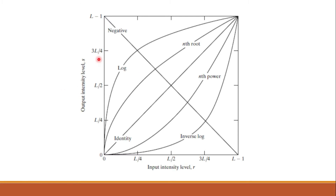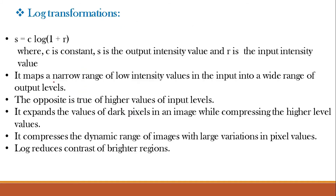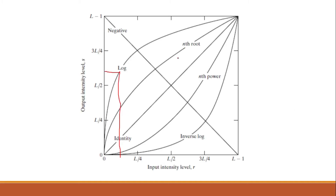Looking at the same figure again: for the log function, when the input value is low (near black), the output value becomes much brighter — whiter. The darker regions become brighter. Therefore, it maps a narrow range of low intensity input values into a wide range of output levels, while compressing higher input values. Higher level values are visibly compressed on the graph. It reduces the contrast of brighter regions, while the opposite is true for inverse log.